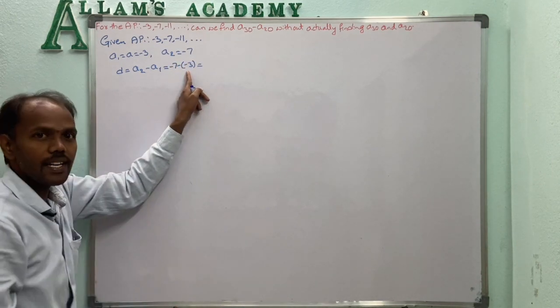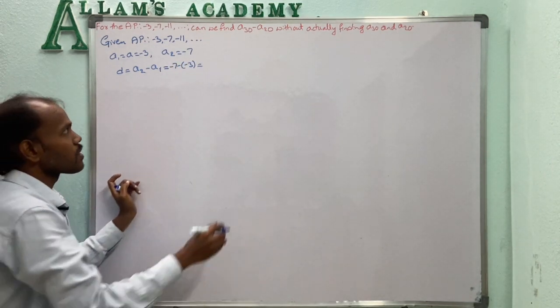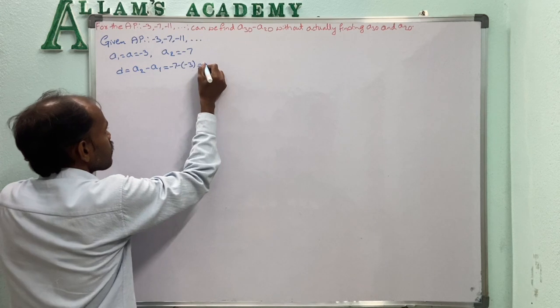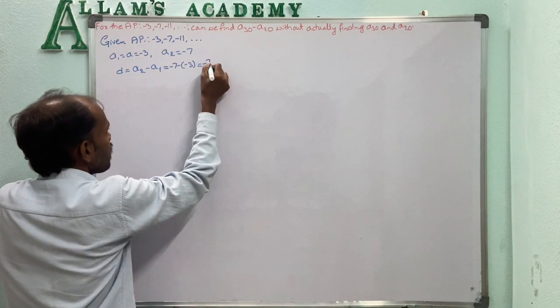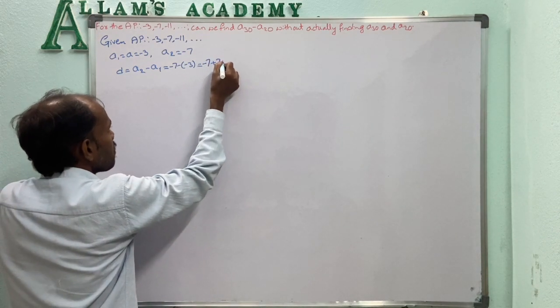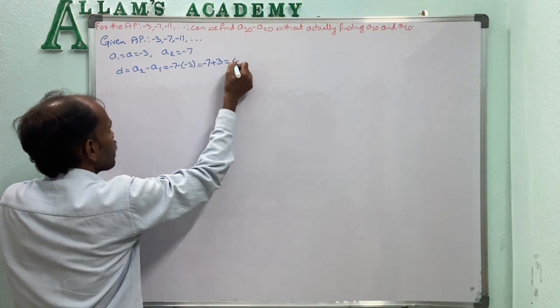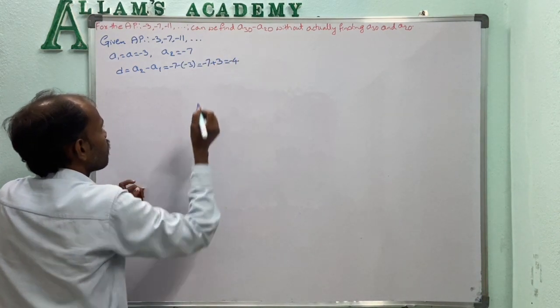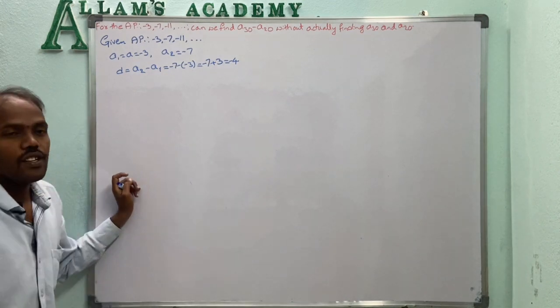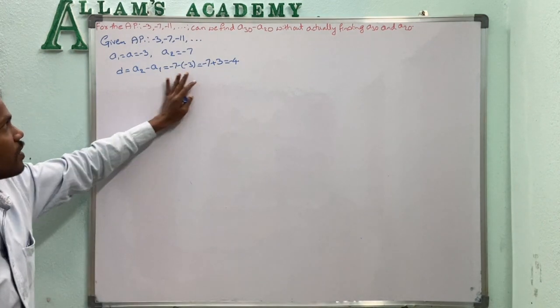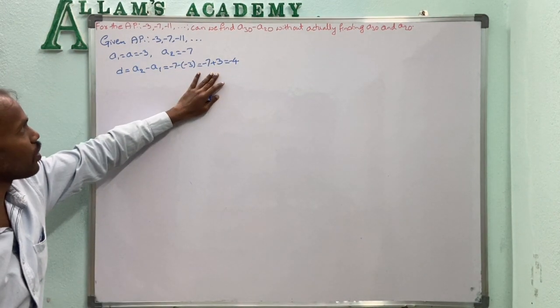Minus into minus becomes plus, so -7 plus 3 equals -4. The D value is -4.